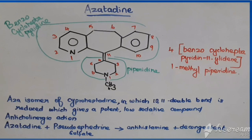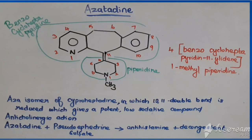In the first portion of piperidine, it is having methyl, and the fourth portion it is connected to a fusion of three rings by means of a double bond. This ring can be called benzene, and that one is fused with cycloheptane, and that is fused with pyridine — so that can be totally called benzocycloheptapyridine. That is the structure of azatadine.